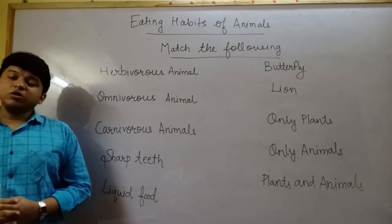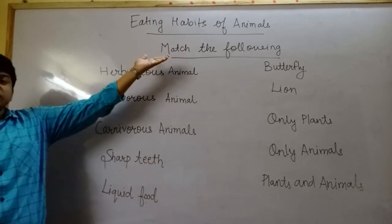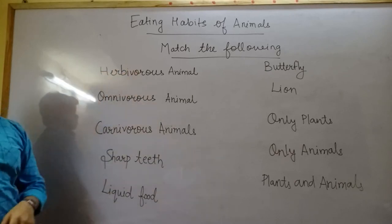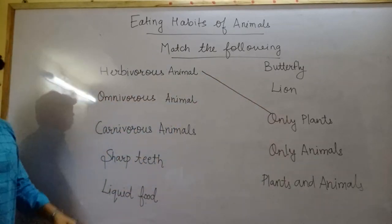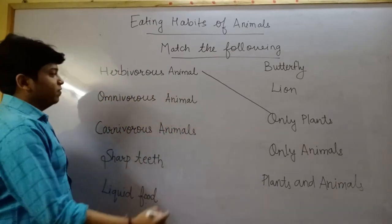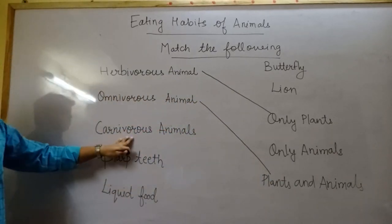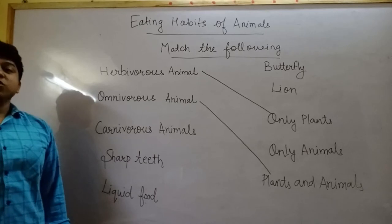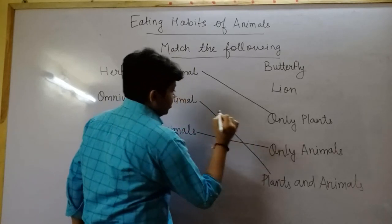As we have learnt about herbivorous, omnivorous, and carnivorous animals, now we will do one exercise of matching. Herbivorous animals eat only plants, so we match them with only plants. Omnivorous animals eat both plants and animals, so we match them with plants and animals. Carnivorous animals eat only other animals, so we match them with only animals.